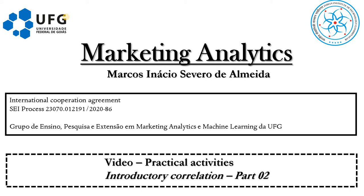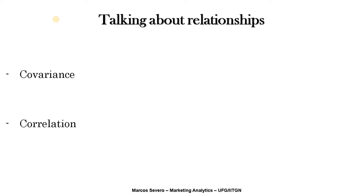In the last lecture we saw some dispersion measures such as skewness, kurtosis, and coefficient of variation. Now we are going to understand how they operate in the bivariate relationship amongst two quantitative variables. Specifically, we are going to first talk about covariance and then I'm going to present the correlation concept with a practical application. The correlation concept is more popular, but before understanding correlation it is important to understand the insights that covariance provides.